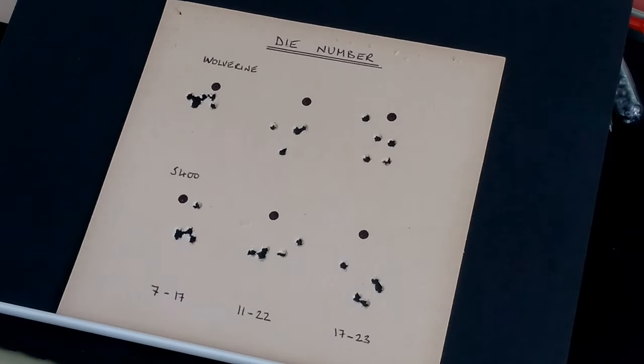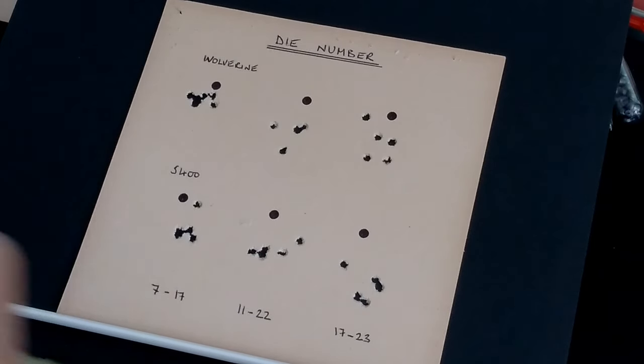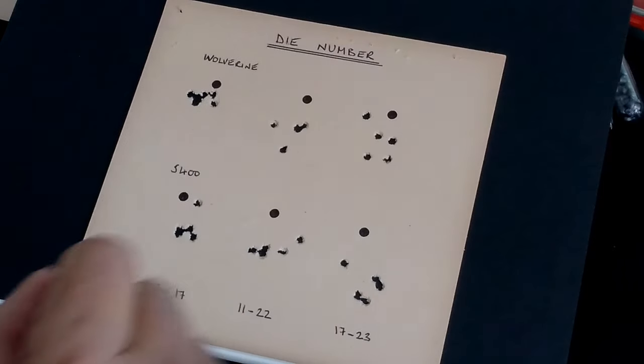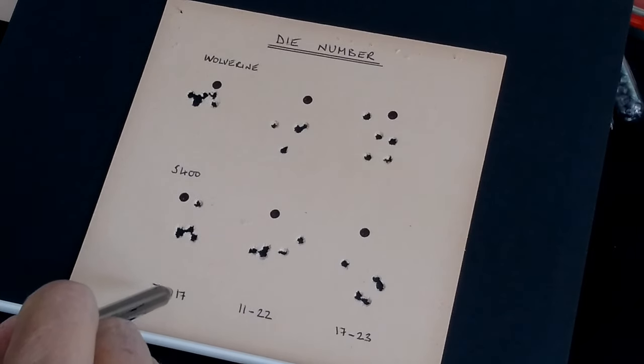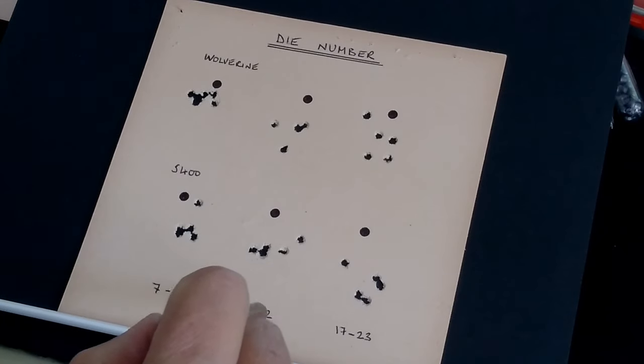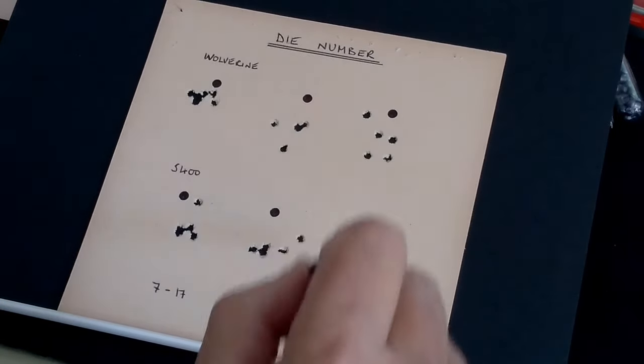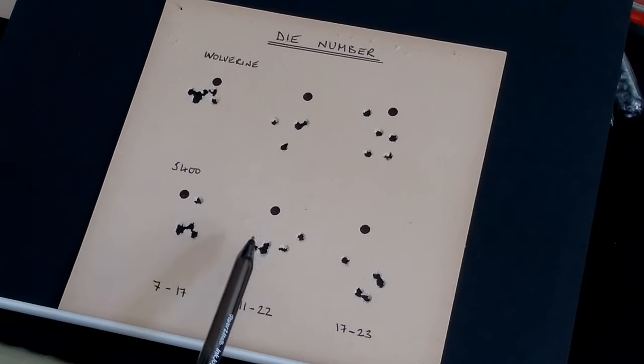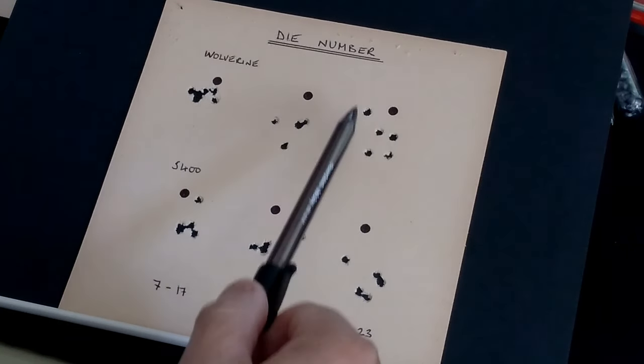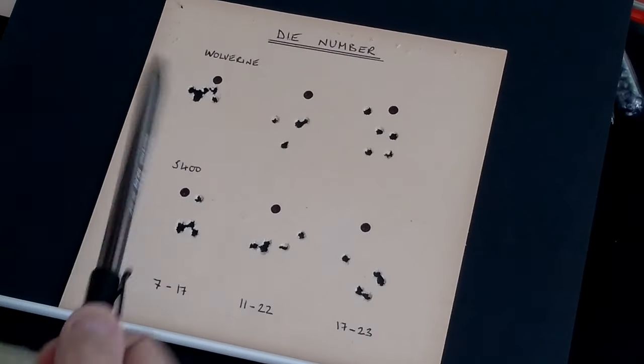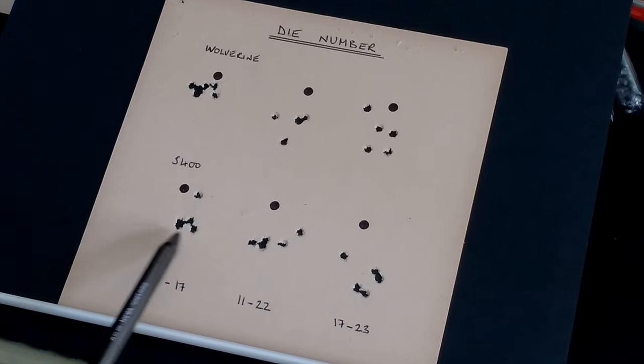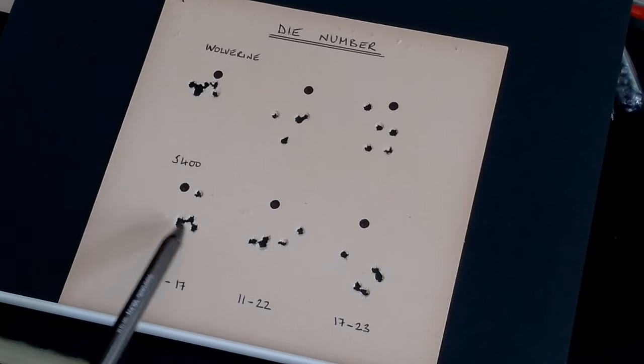Let's look at the results for the die number test then and I must say this one looks as if it's pretty conclusive. I was quite surprised by this. Again we've got the Wolverine at the top, S 400 at the bottom. The first column is die 7 manufactured in 2017, second is die 11 manufactured in 2022 and the third is die 17 manufactured in 2023. You can see here that the die 11 and the die 17 are pretty similar but then when you look at die 7, look at that group there and then this group here. There is one that's sort of out of that but four shots in there at 45 yards.